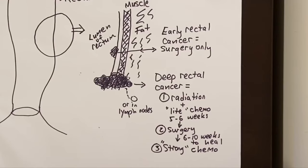So a quick recap: early rectal cancer not growing through the muscle of the wall of the rectum gets surgery and no other treatment. Deeper rectal cancer growing through a muscle layer or into lymph nodes gets radiation with light chemotherapy, then surgery, then chemotherapy after.